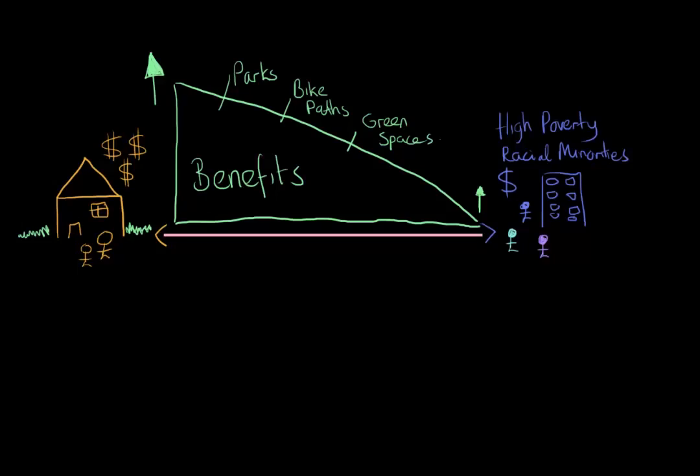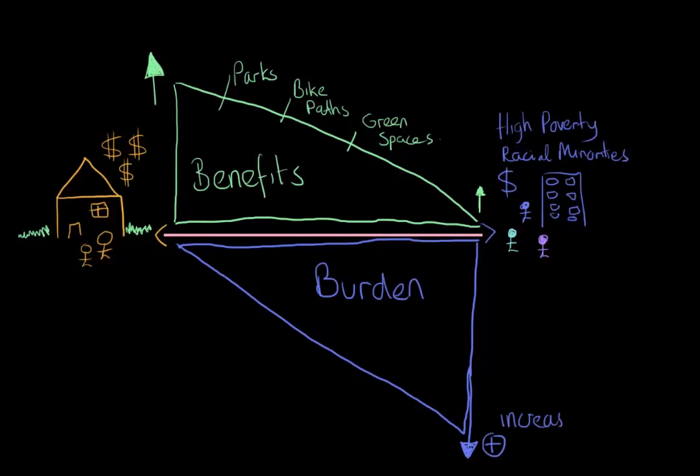But what the high poverty and racial minority part of society does get - it does get something. What it gets is a lot of environmental burden. So what does that look like? This line actually represents increasing burden. So compared to the high income part of society, the high poverty and racial minorities get increasing burden.